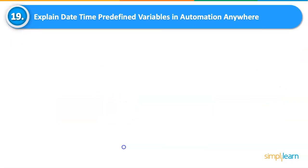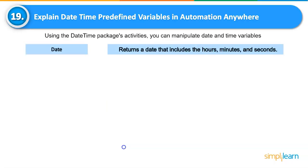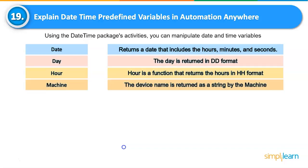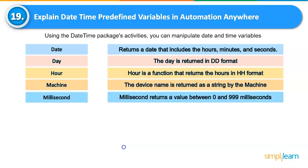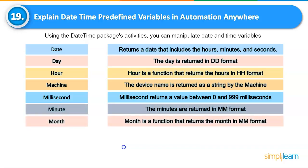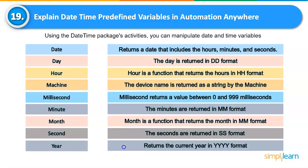Explain the date-time predefined variables in Automation Anywhere. Using the date-time package activities, you can manipulate date and time variables. Date: returns a date that includes hours, minutes, and seconds. Day: returns the day in date format. Hour: returns the hours in hours format. Machine: returns the device name as a string. Millisecond: returns a value between 0 and 999 milliseconds. Minute: returns the minutes in minute format. Month: returns the month in month format. Seconds: returns the seconds in seconds format. Year: returns the current year in year format.